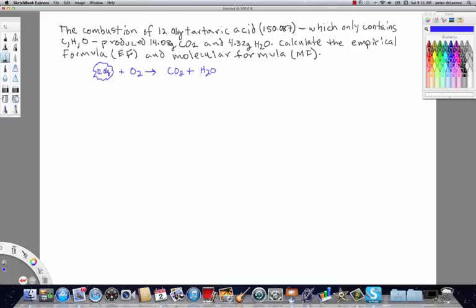In this example, we're going to find the empirical formula for tartaric acid. This is a compound that contains carbon, hydrogen, and oxygen. The way the problem reads is fairly typical. The combustion of 12.01 grams of tartaric acid (the molar mass is 150.087) which only contains C, H, and O produced 14.08 grams of CO2 and 4.32 grams of H2O. Calculate the empirical formula (EF) and calculate the molecular formula (MF).